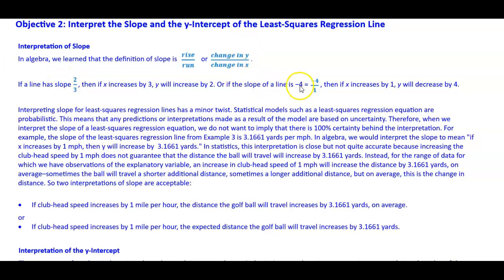Or if the slope of a line is negative 4, which is the same as negative 4 divided by positive 1, then if x increases by positive 1, y will decrease by 4.